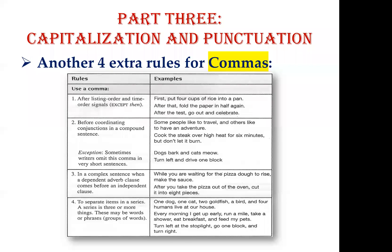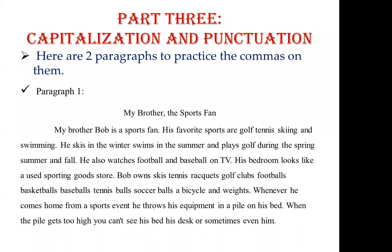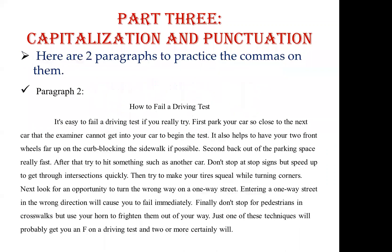Rule four: use commas to separate items in a series — three or more items. When there are only two items, no comma is needed. Items can be words, phrases, or groups of words. Example: 'Every morning I get up early, run a mile, take a shower, eat breakfast, and feed my pets.' Whenever there are more than two things, separate them with commas.